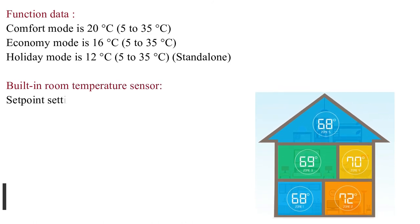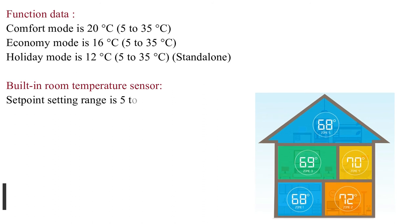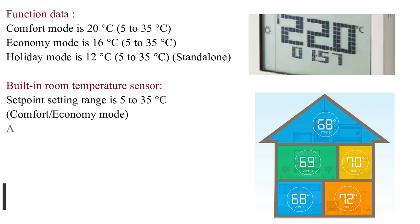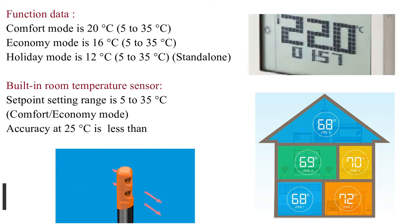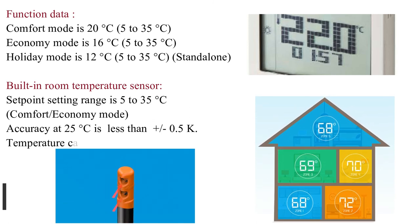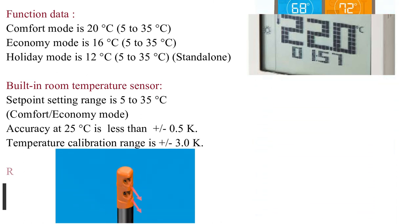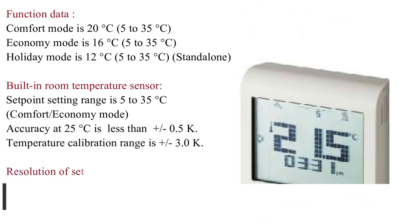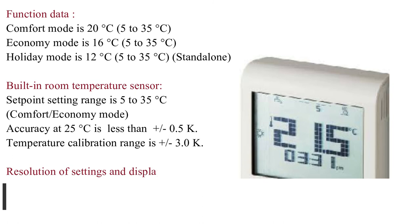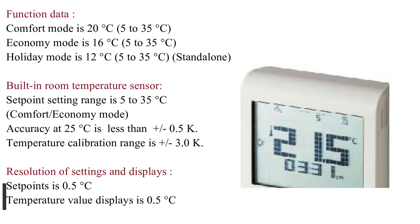Built-in room temperature sensor: Setpoint setting range is 5 to 35 degrees Celsius for comfort and economy mode. Accuracy at 25 degrees Celsius is less than ±0.5 K. Temperature calibration range is ±3.0 K. Resolution of settings and displays: Setpoints is 0.5 degrees Celsius, temperature value displays is 0.5 degrees Celsius.